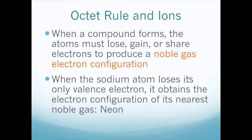Back to the octet rule. When a compound forms, the atoms must lose, gain, or share electrons to produce a noble gas electron configuration. The noble gases are all the way to the right in the column that includes helium, neon, argon, krypton, and so on. All of these gases have eight electrons in their outer shell, which is considered the most stable arrangement of electrons for that size of atom.